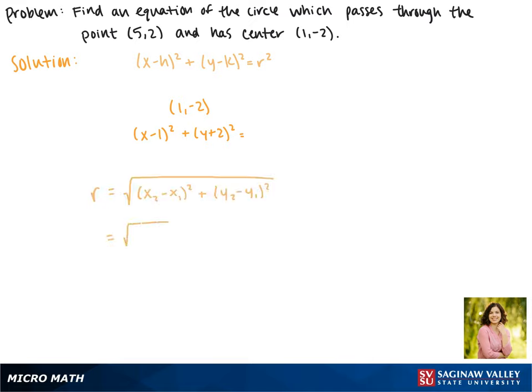Plugging in our numbers gives us the square root of (1 - 5)² + (-2 - 2)². So this gives us the square root of (-4)² + (-4)². Negative 4 squared is 16, so this is the square root of 16 plus 16, which is the square root of 32.